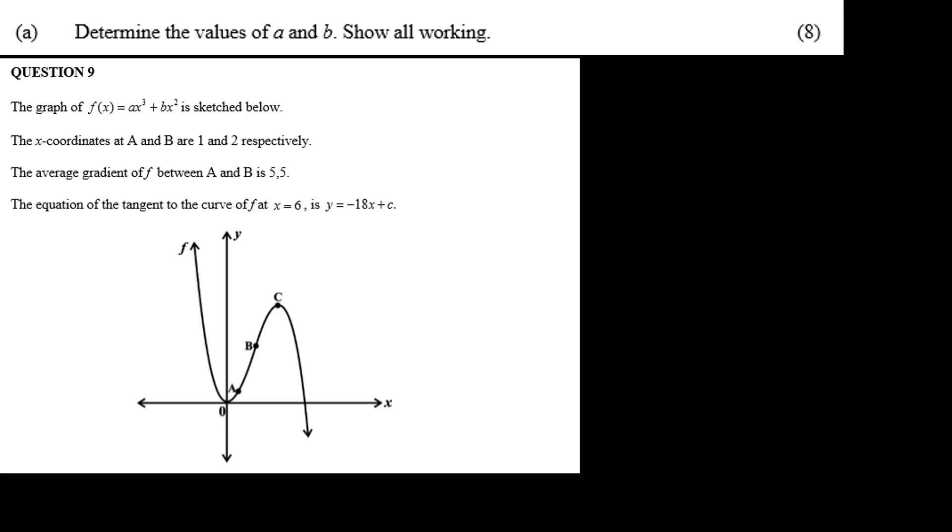Take a minute to understand what we're given. f(x) is a cubic function starting from the top left, so a is negative. We're given x-coordinates only of the points a and b, with the slope of the straight line between them being 5.5.